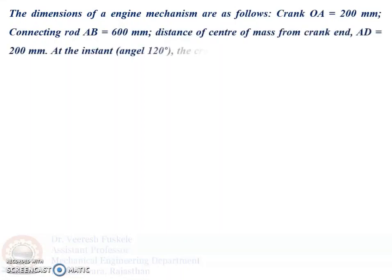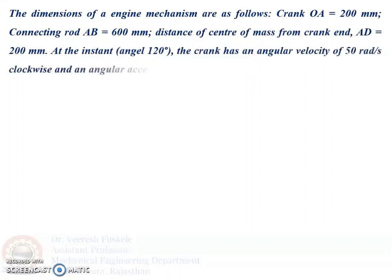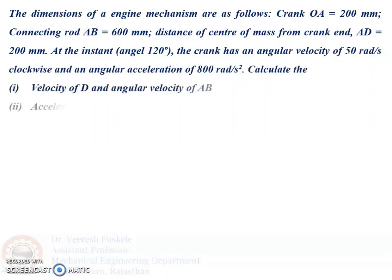Crank OA is equal to 200 mm. Connecting rod AB is equal to 600 mm. The distance of center of mass from crank end, AD, is equal to 200 mm. At the instant when the crank has rotated 120 degrees, it has an angular velocity of 50 radians per second clockwise and an angular acceleration of 800 radians per second squared. Calculate the velocity of D and the angular velocity of AB.